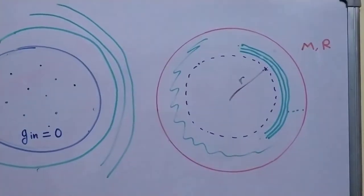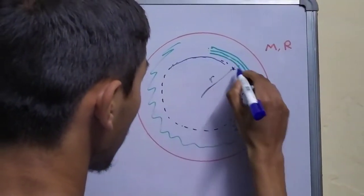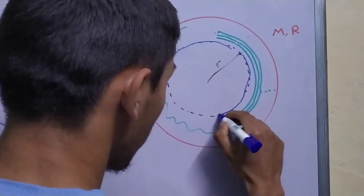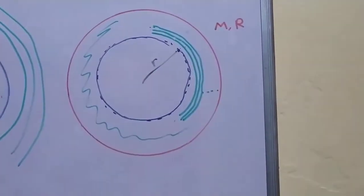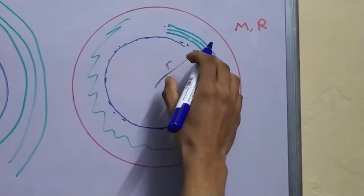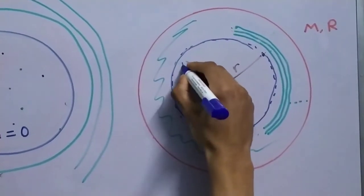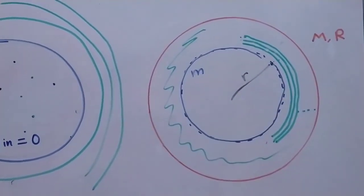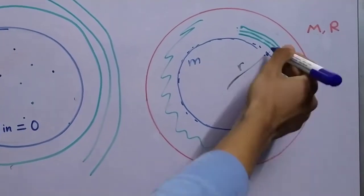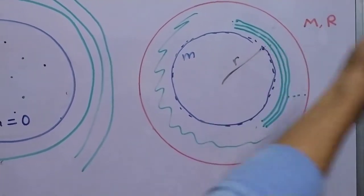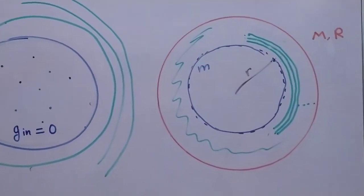So we only need to consider the blue region. And this one is easy to calculate. It's just a sphere having some mass, let's say small m, and a radius small r, and we need to calculate the gravitational field at its surface. This is a pretty easy job to do.